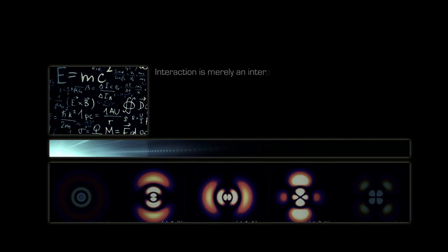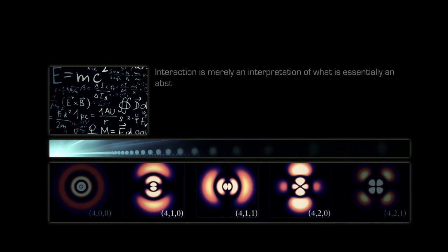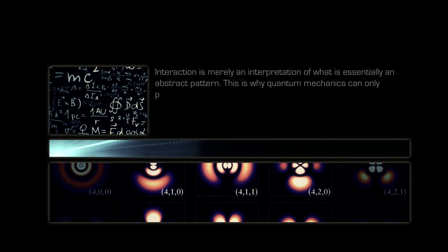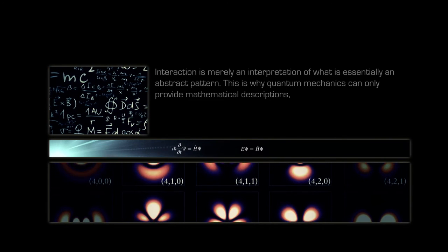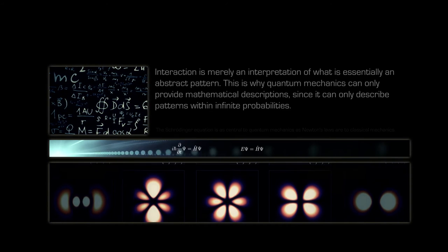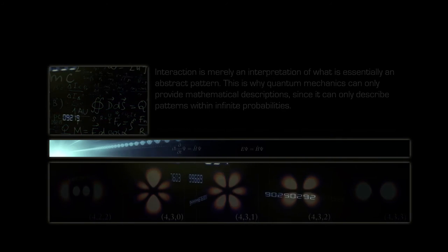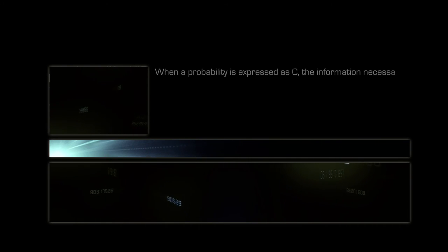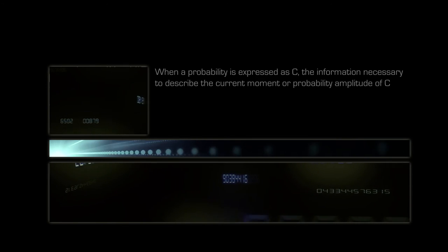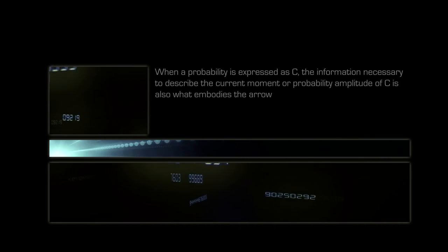Interaction is merely an interpretation of what is essentially an abstract pattern. This is why quantum mechanics can only provide mathematical descriptions, since it can only describe patterns within infinite probabilities. When a probability is expressed as C, the information necessary to describe the current moment or probability amplitude of C is also what embodies the arrow of time.